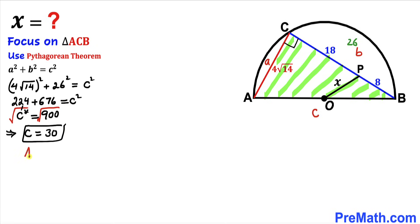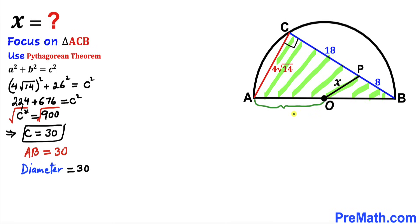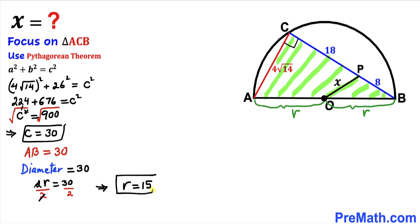Side length AB is represented by lowercase c, so AB equals 30. Since AB is the diameter of the semicircle, the diameter equals 30. Labeling the radius as r, we have 2r = 30. Dividing both sides by 2, the radius r equals 15 units.